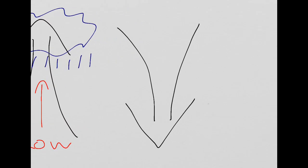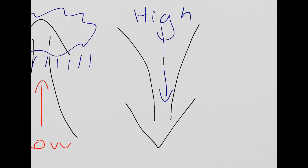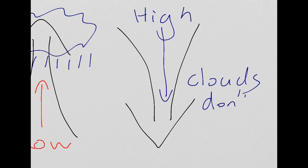This arrow represents high pressure. In this example, the air is sinking. As the air sinks, it warms up and is able to hold more moisture, so clouds don't form. This is the scenario we see with anti-cyclones: high pressure weather systems where the air is sinking, no clouds form, and therefore we don't get any precipitation. That's the principle behind these two weather systems.